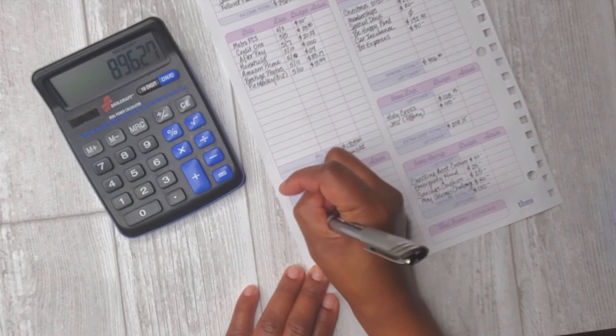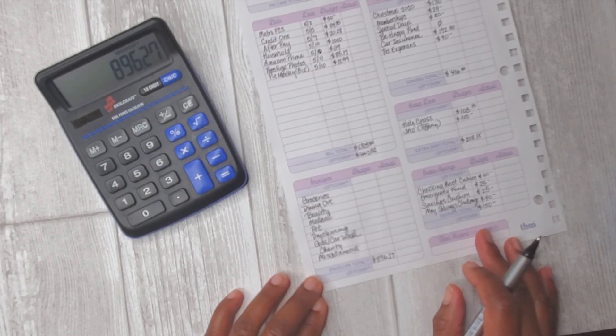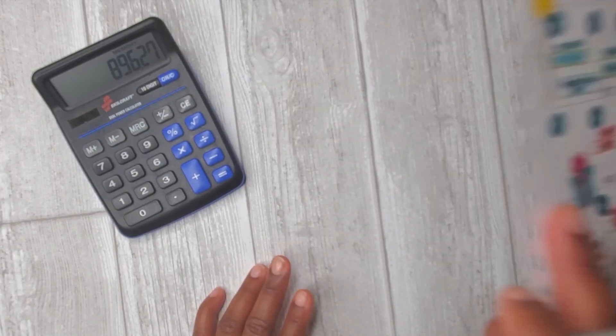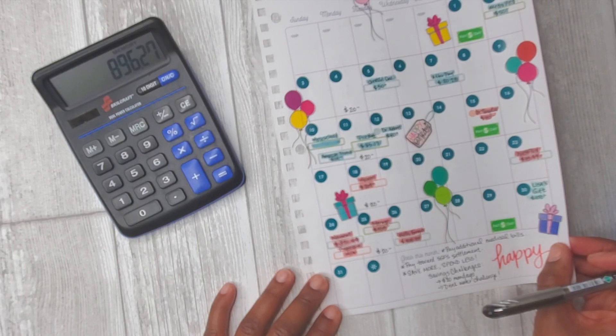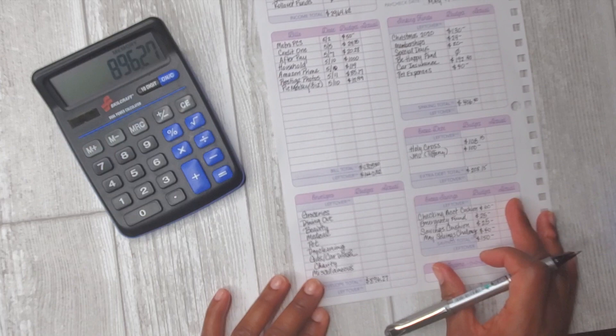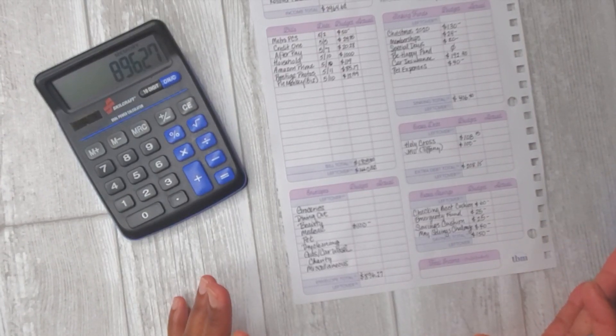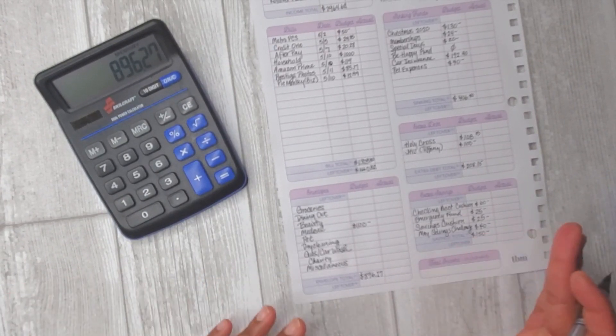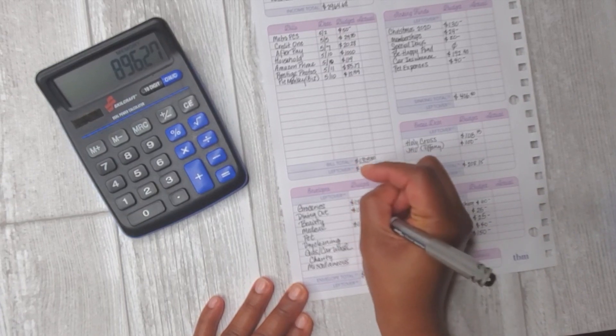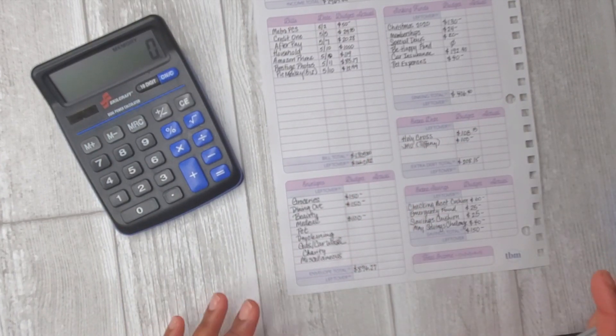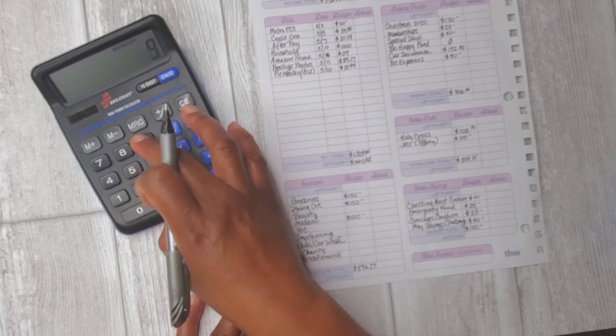My variable expenses will be groceries, dining out, beauty, medical, dry cleaning, gas, car wash, charity, and miscellaneous. For this budget I know that I have at least one medical copay to cover and I normally estimate at least two, so I'm just to be on the safe side going to set aside $100 for medical. That will allow us up to two more additional copays if we have any more telemedicine visits. Groceries let's say $150, dining out $150.